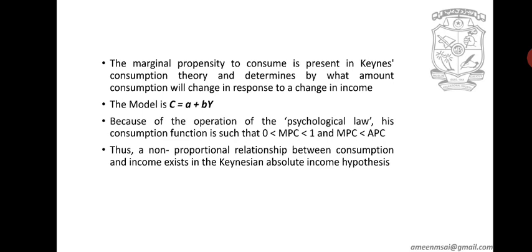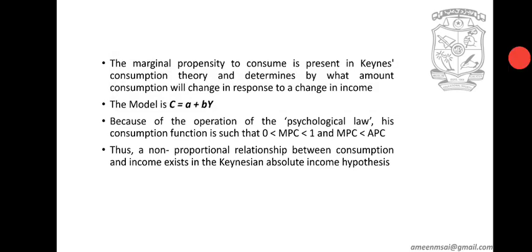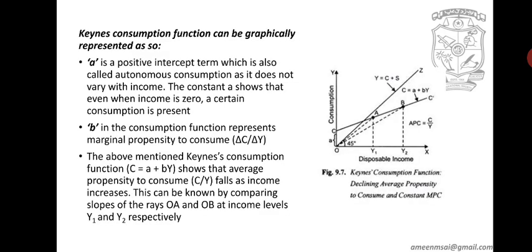Keynes' consumption function is a broad idea. That broad idea includes concepts we discussed: the psychological law of consumption and the absolute income hypothesis. The Keynes consumption function, C is equal to A plus B times Y, can be graphically represented, and this is a basic principle.